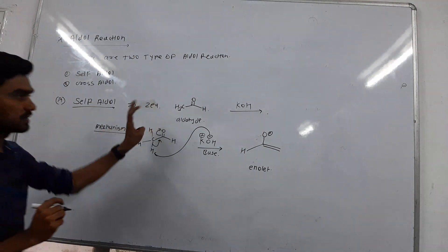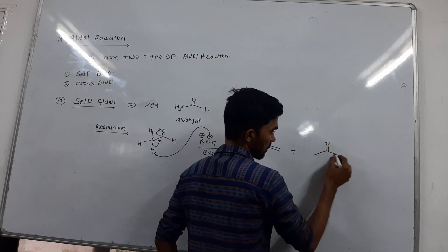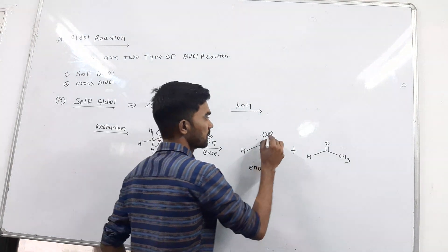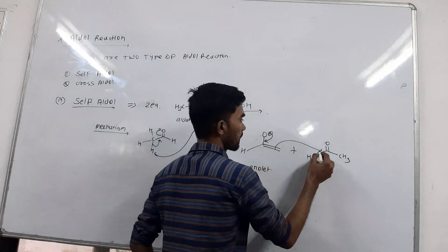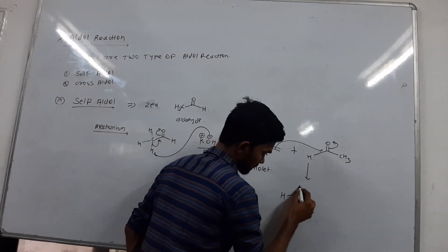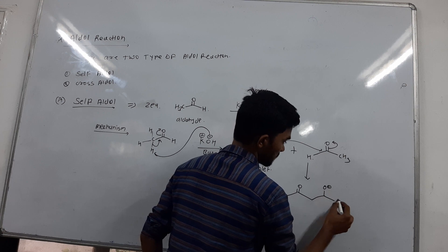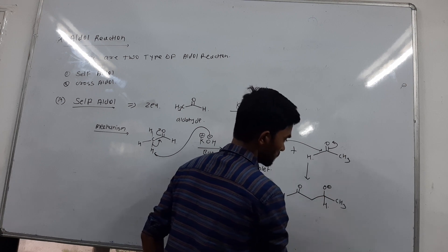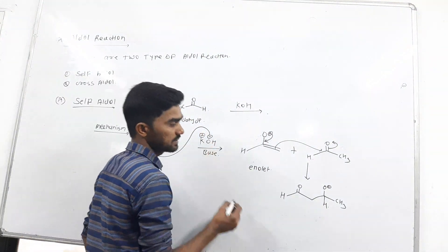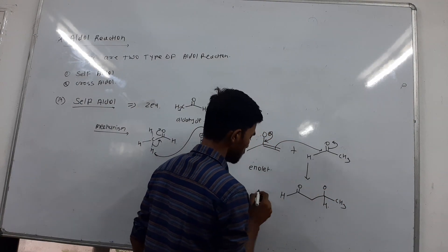The enolate will attack the same aldehyde molecule — same molecule of aldehyde. That attack occurs at the carbonyl, O minus, C. Then again, use the base. This molecule undergoes protonation with H plus.